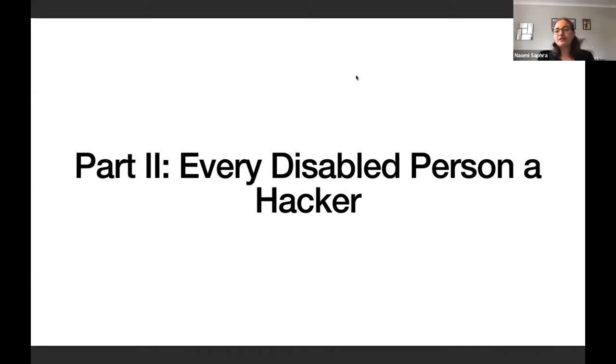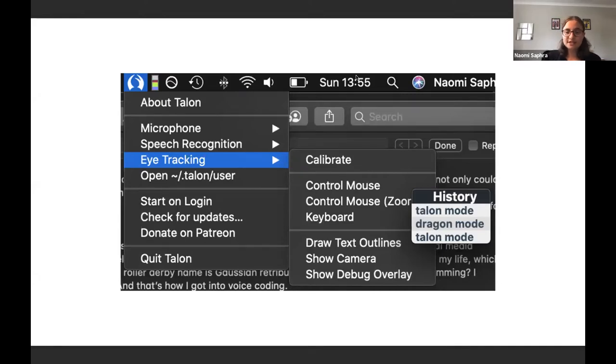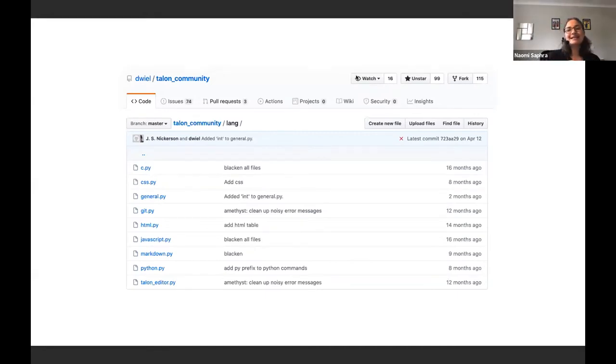When you have a disability, every path forward requires that you ensure that technology serves your needs and not the needs imagined by someone else. So that means that your tools have to be hackable, and I'm going to use my case as an example. Talon is a scriptable interface for dictating code, and the thing that sets it apart from a standard speech-to-text system is that it offers a powerful API.